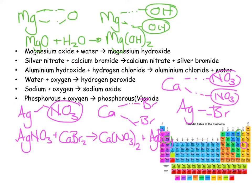Balancing: 1 silver on the left, 1 on the right, but 2 nitrates needed on the right — put a 2 in front of AgNO₃ and a 2 in front of AgBr. Now: 2 silvers, 2 nitrogens, 6 oxygens, 1 calcium, and 2 bromines on each side. That is the balanced equation.